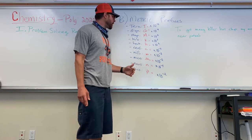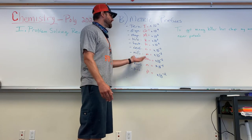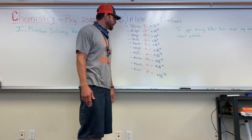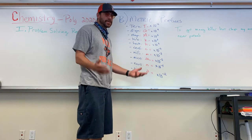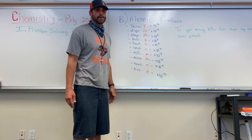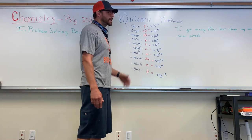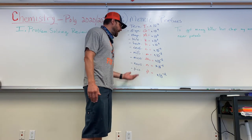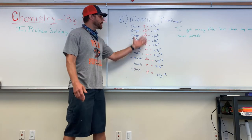Kilo means a thousand, or 10 to the 3rd. Hecto means 10 to the 2nd. Centi means 10 to the negative 2nd — one one-hundredth of something. Like a cent — that's one one-hundredth of a dollar. Milli, like millennium — one year is one one-thousandth of a millennium. Milli means 10 to the negative 3rd. Micro is 10 to the negative 6th. Nano is 10 to the negative 9th. And Pico is 10 to the negative 12th.